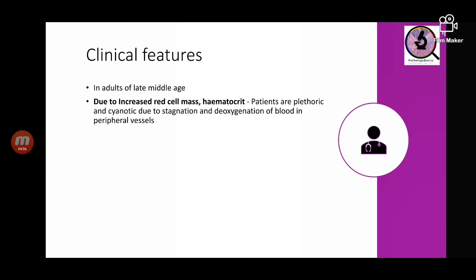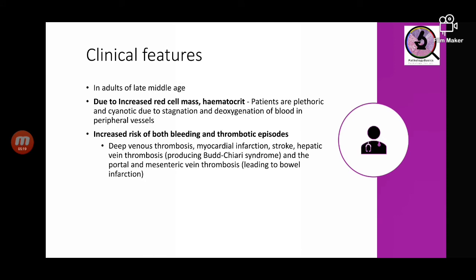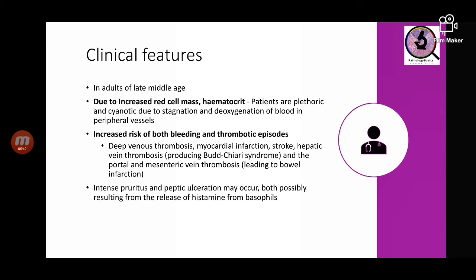Clinically, polycythemia vera is mainly seen in adults of late middle age. Patients become plethoric and sometimes cyanotic due to stagnation of blood in peripheral vessels. There is increased risk of both bleeding and thrombotic episodes. Thrombotic episodes arise because of deep vein thrombosis, embolism, myocardial infarction, stroke, blockage of the hepatic vein producing Budd-Chiari syndrome, and portal and mesenteric vein thrombosis leading to bowel infarction. Increased basophils may cause intense pruritis and peptic ulceration due to histamine release. High cell turnover leads to hyperuricemia and gout.